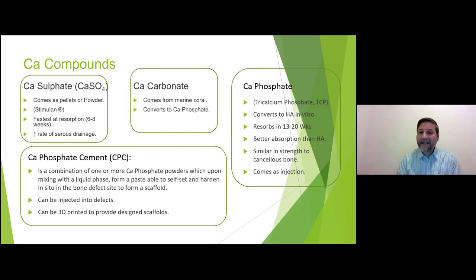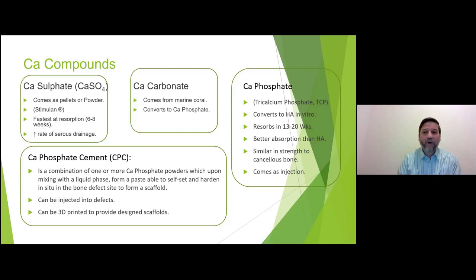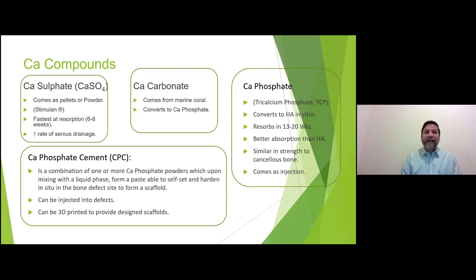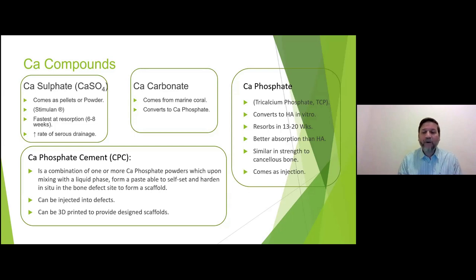Calcium phosphate can be in two forms: tricalcium phosphate or cement. Tricalcium phosphate converts into hydroxyapatite, resorbs in about 13 to 20 weeks, has faster absorption than hydroxyapatite, and has similar strength to cancellous bone once solidified. It comes as an injectable material that goes solid inside the body. The second form is calcium phosphate cement — a combination of more than one calcium product designed to benefit from different rates of absorption.